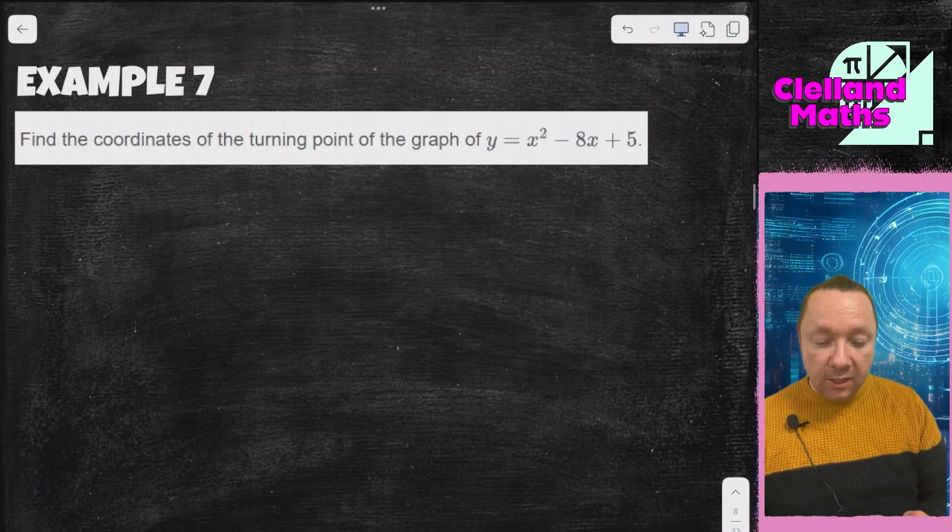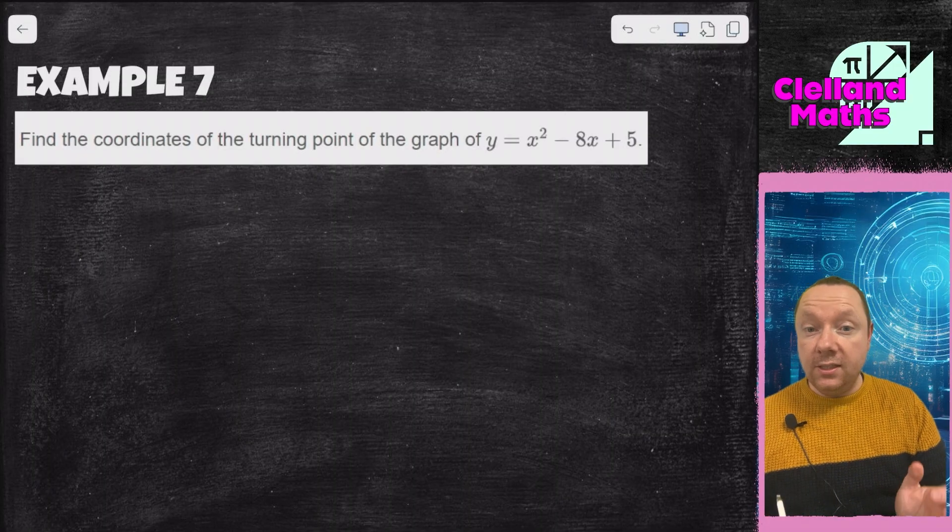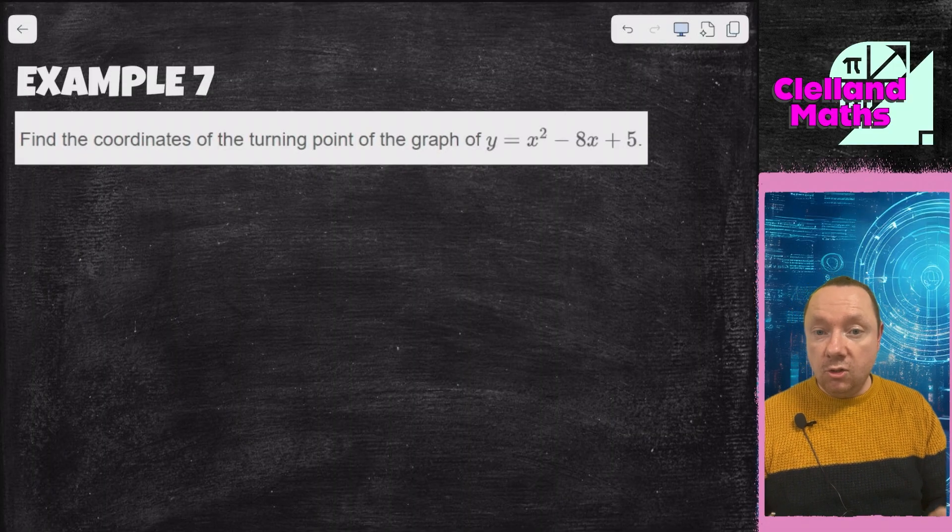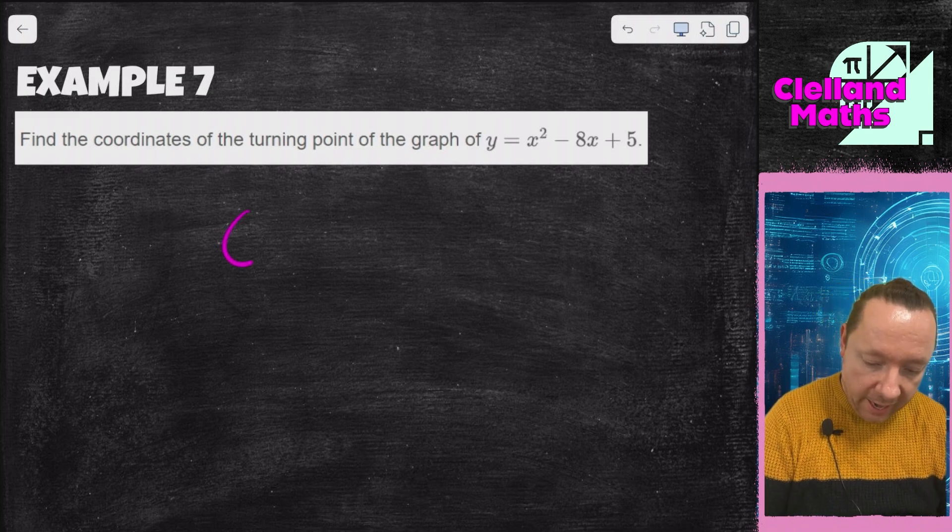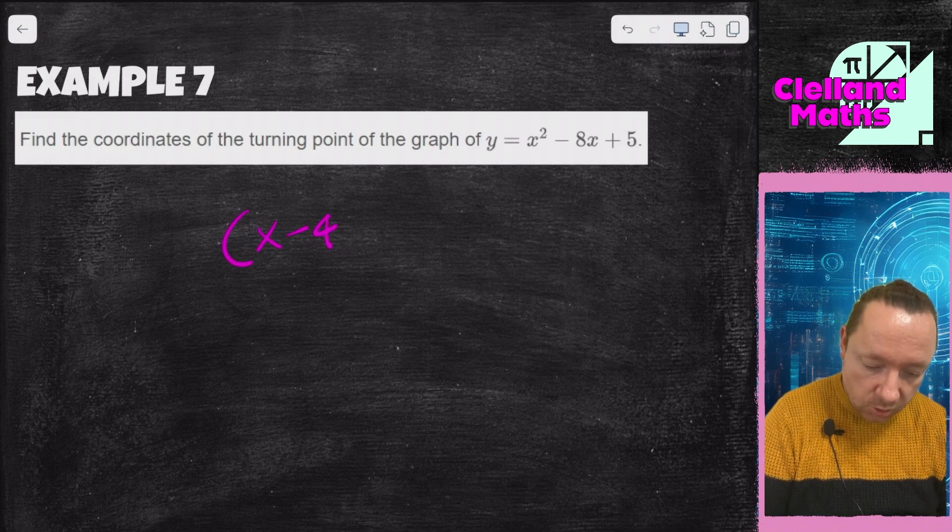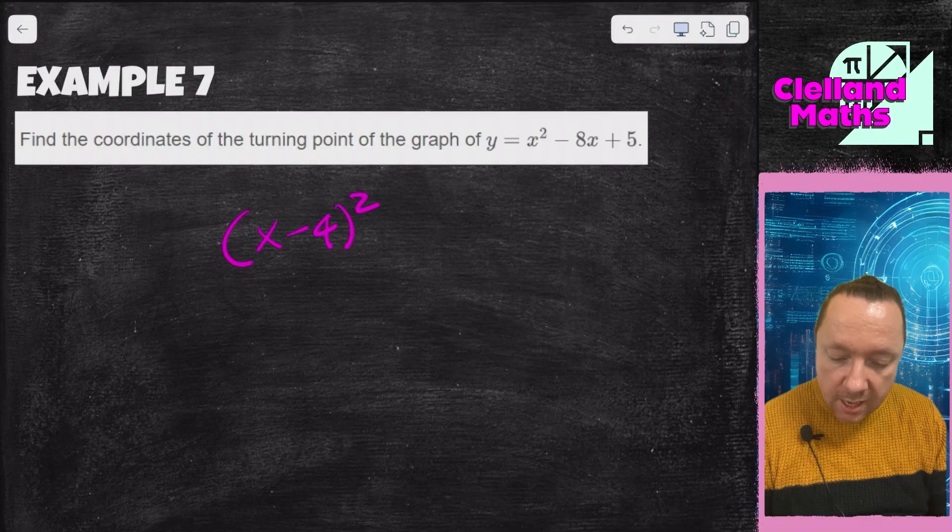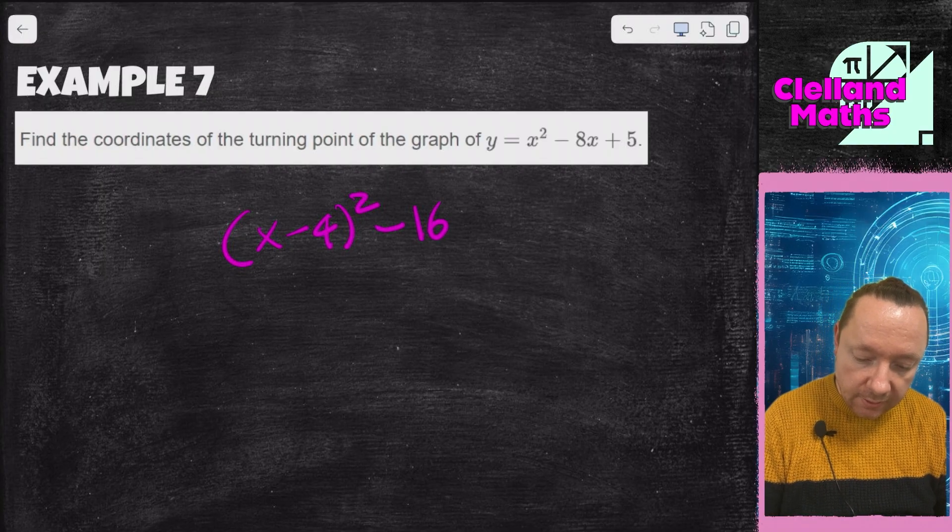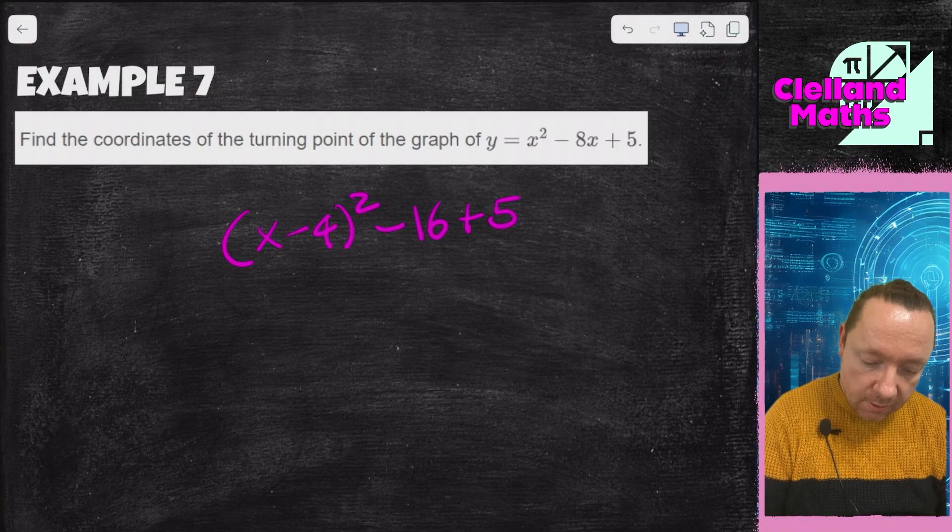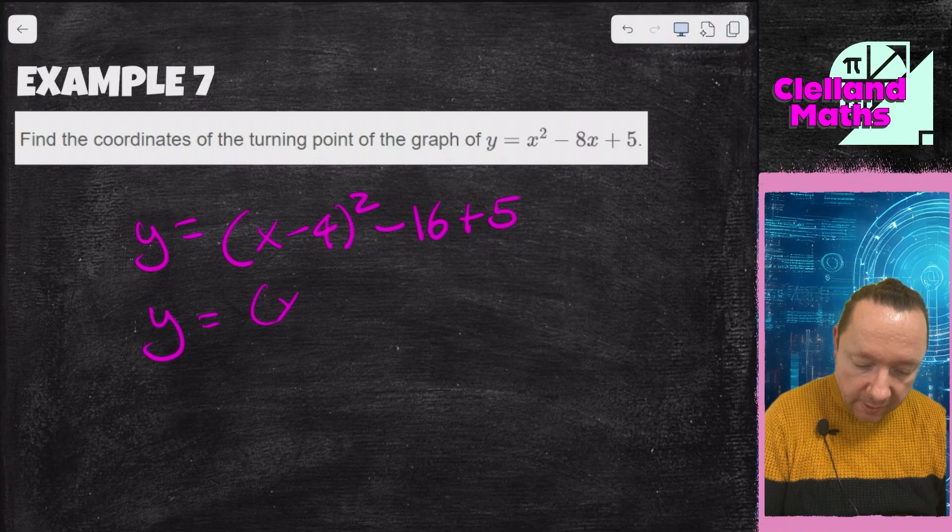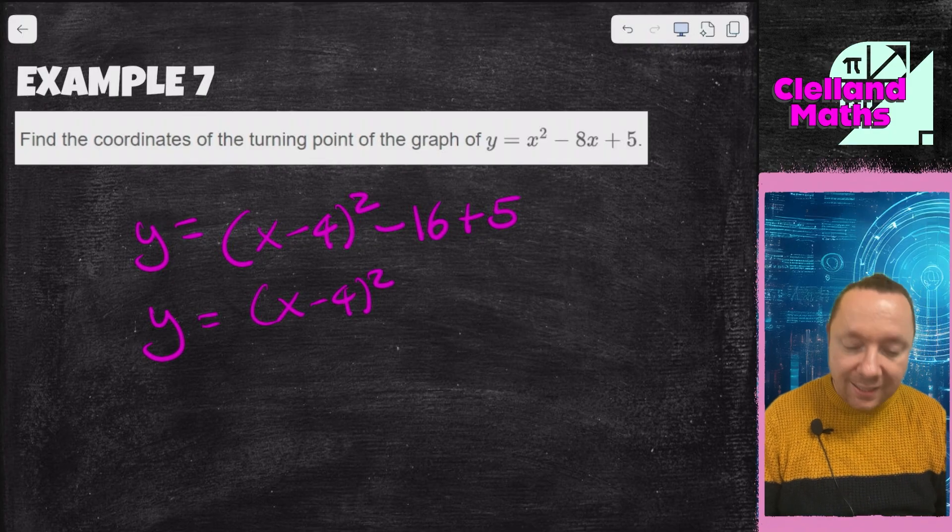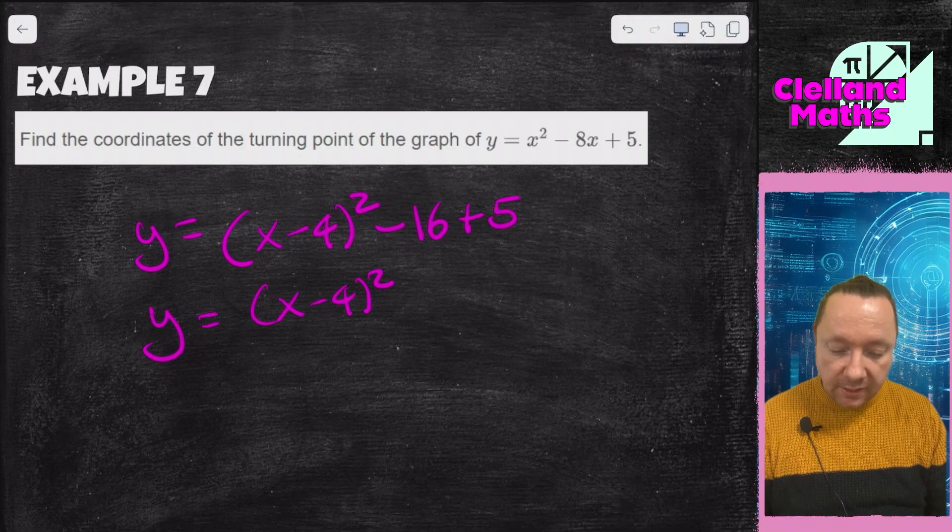Now we're getting into the turning points. Find the coordinates of the turning point of this graph. It doesn't tell us how to do it. There's two ways to do it, and one way is completing the square. So I complete the square and I get x minus 4 squared, take away 4 squared which is 16 and add 5. y equals this, so y equals x minus 4 squared minus 16 plus 5 is minus 11.